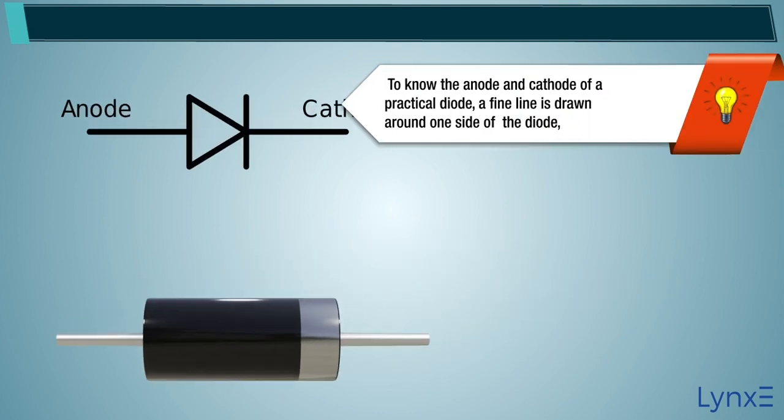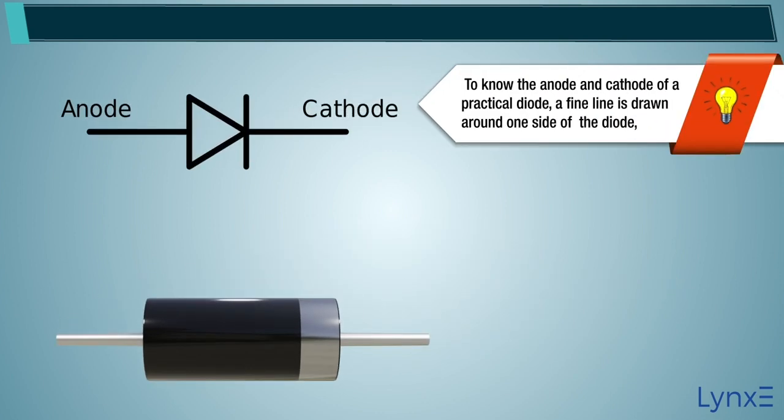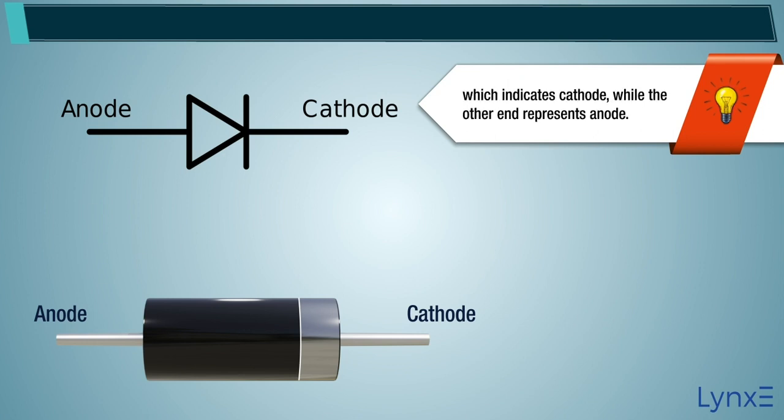Note: To know the anode and cathode of a practical diode, a fine line is drawn around one side of the diode, which indicates cathode, while the other end represents anode.